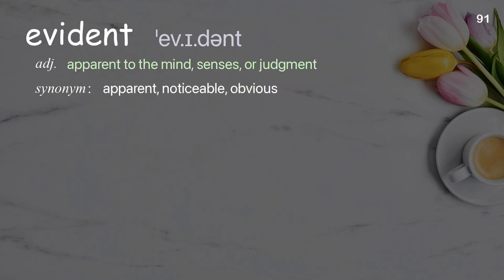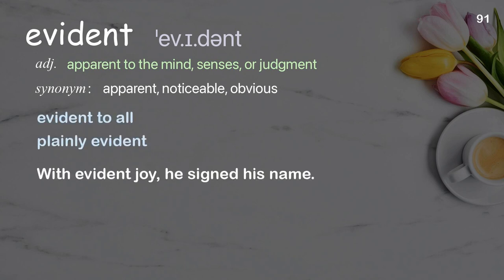Evident: apparent to the mind, senses, or judgment. Examples: evident to all, plainly evident. With evident joy, he signed his name.